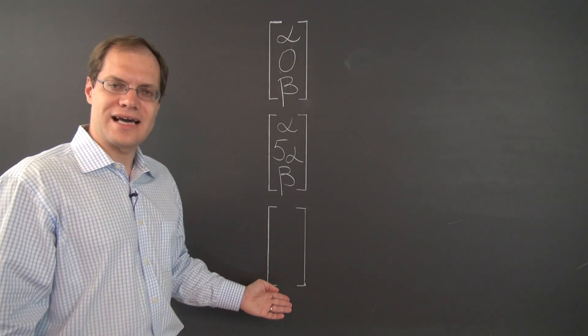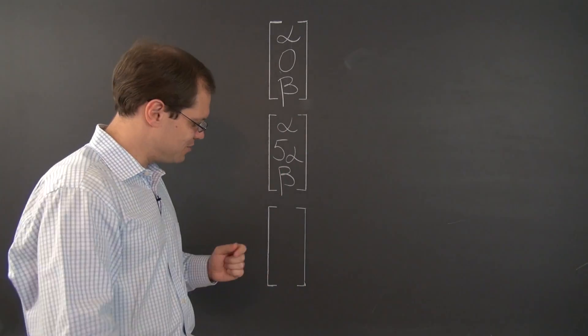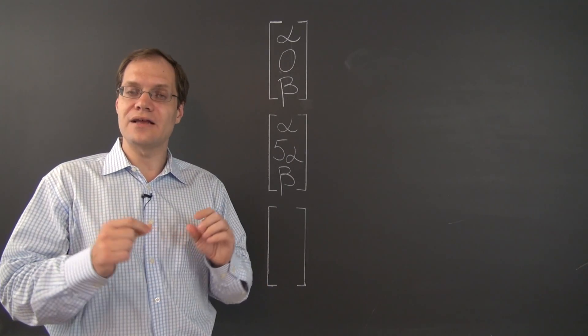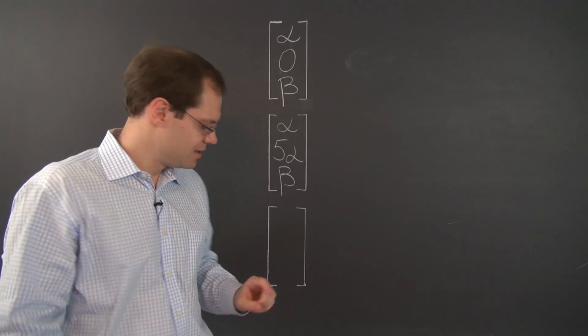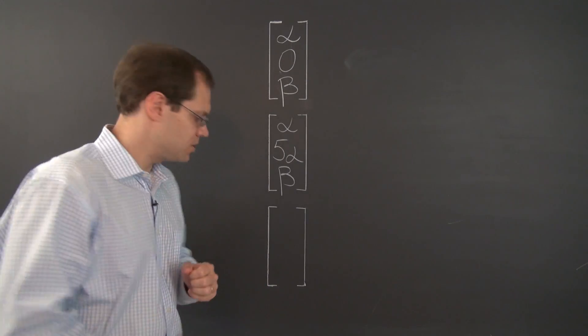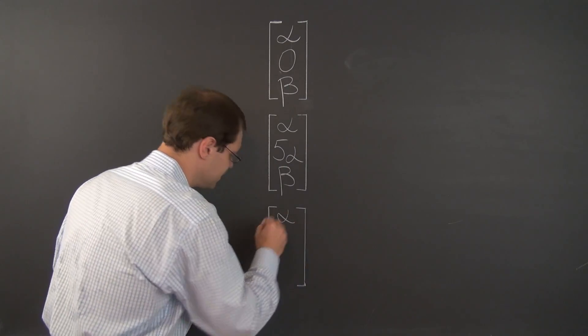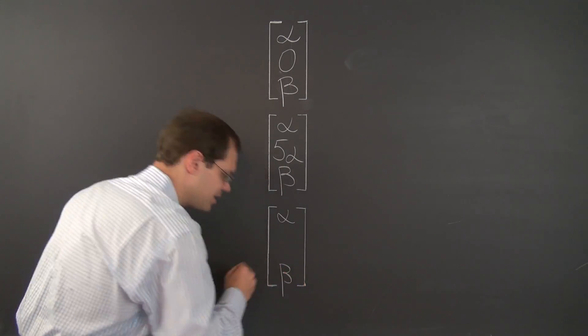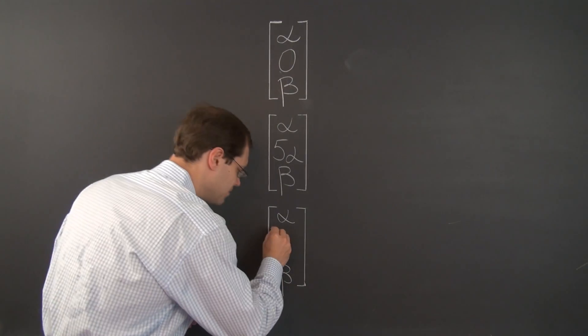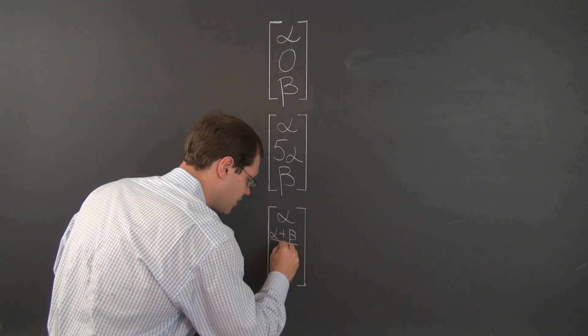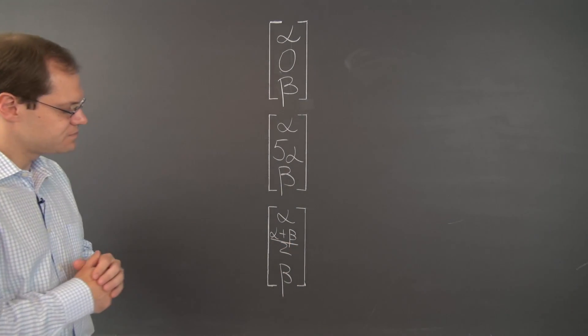Our final example, before we consider one more, our final example was the most interesting of the bunch. And it was characterized by the property that the middle entry was the average of the other two. So what better way to express it than to say the first entry can be anything you want. The last entry can be anything you want. But the middle entry needs to be the average of the other two. That's perfect.